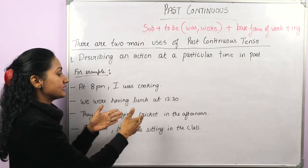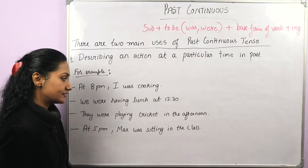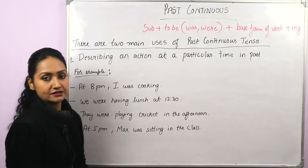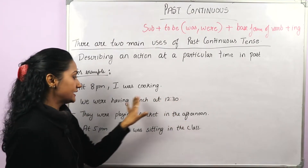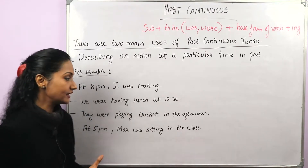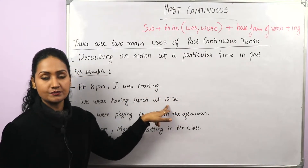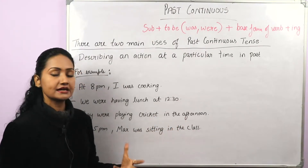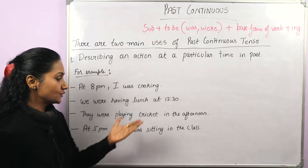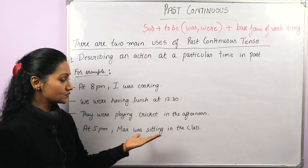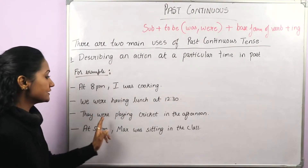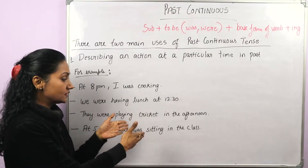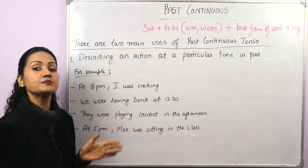Another example: 'We were having lunch at 12:30.' They started eating before 12:30 and it continued till 12:30 — they were still having their lunch. 'They were playing cricket in the afternoon' means they started playing in the morning or before afternoon and that action continued till the afternoon. That's why we use past continuous here.